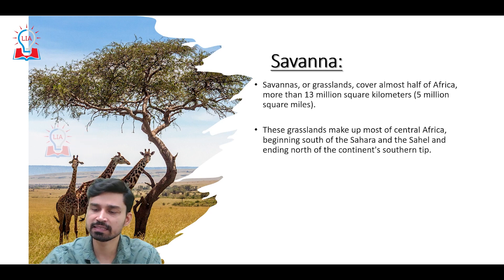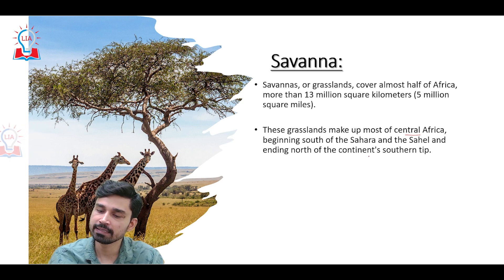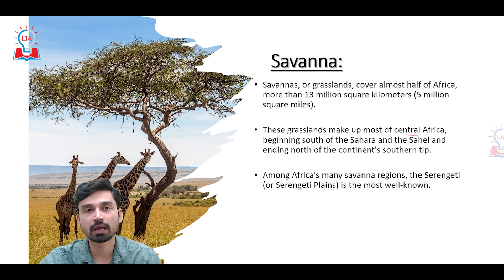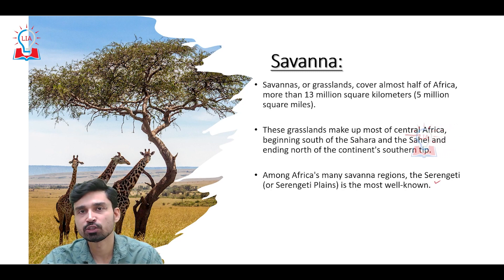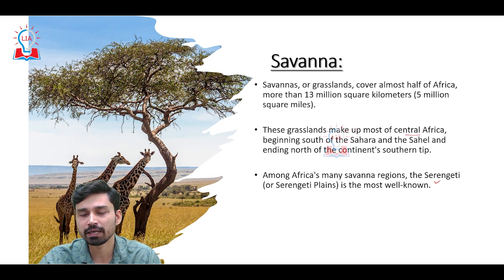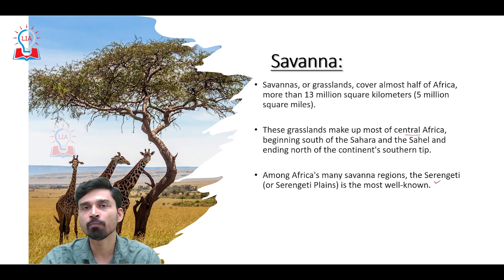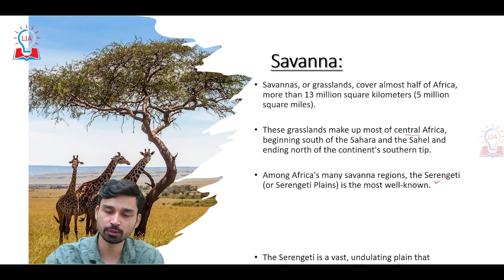These grasslands cover most of central Africa, beginning south of the Sahara and Sahel and ending north of the continent's southern tip. Among Africa's many Savannah regions, the largest and most important is what is known as the Serengeti plains, situated between Kenya and Tanzania. Serengeti is an African word which refers to 'endless plain,' and it is quite true — if you stand anywhere in Serengeti and look around, you will not find any other geographical feature.